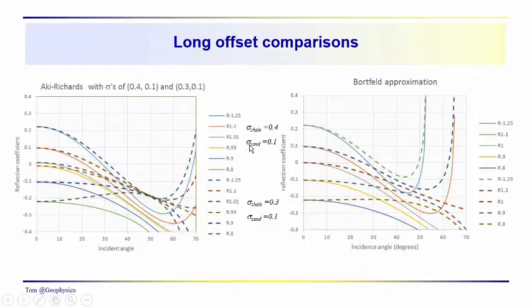When we look at the long offsets, we see this drop for both Poisson ratio differences (0.4 and 0.1, and 0.3 and 0.1 for the dashed lines) where the Poisson ratio drops down to a minimum and then begins to dramatically increase in value. We see that in both the Aki-Richards and in the Bortfeld approximation.